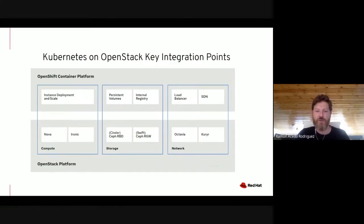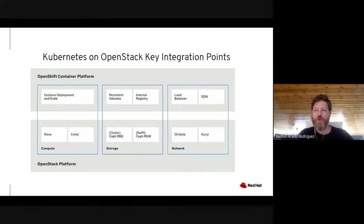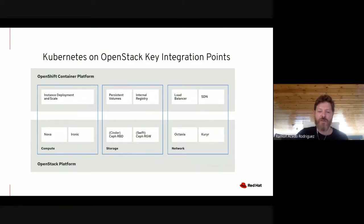Moving to the middle, we have the storage integration. Storage is used by the containers and pods when creating persistent volumes. OpenStack exposes access to persistent volumes via Cinder. The same goes for the registry, where it is common to use Swift object storage provided by OpenStack. On the network side, OpenStack exposes the networks themselves as resources that can be consumed by Kubernetes, as well as load balancing as a service. And there is an integration point called Kuryr that optimizes the performance of traffic between pods.